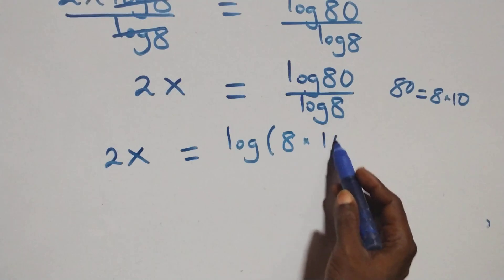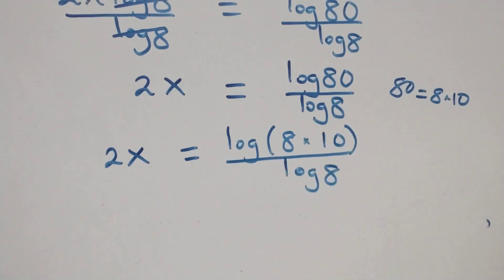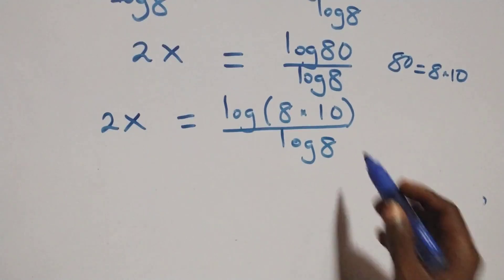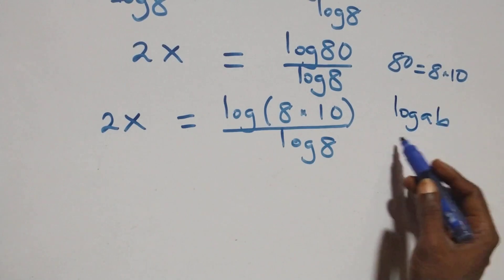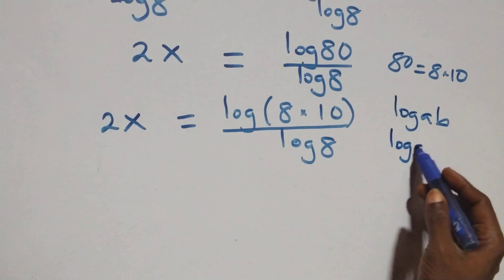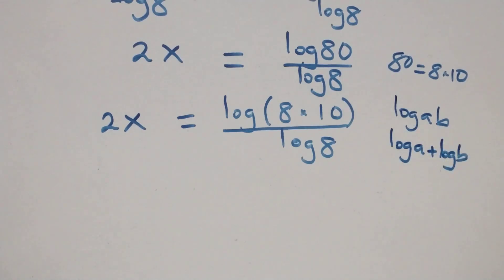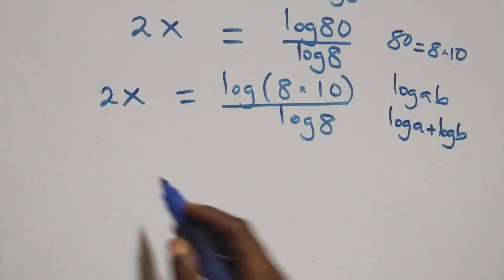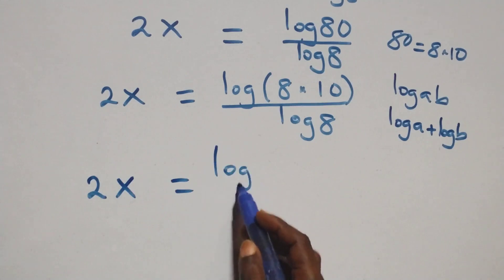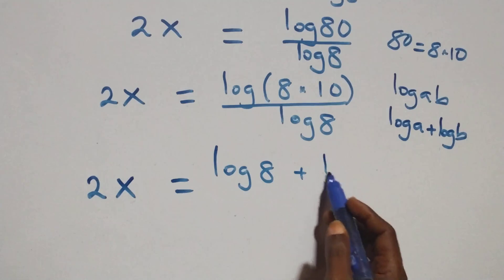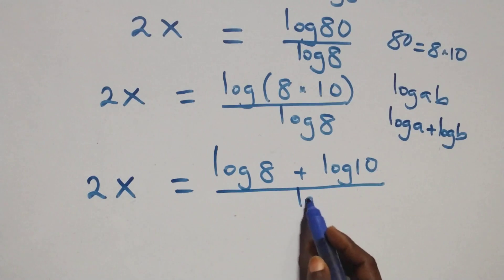That is log of 8 times 10 over log 8. This follows the law of logarithms: when we have log of a times b, this is the same thing as log a plus log b. So what we have becomes 2x equals log 8 plus log 10, all over log 8.